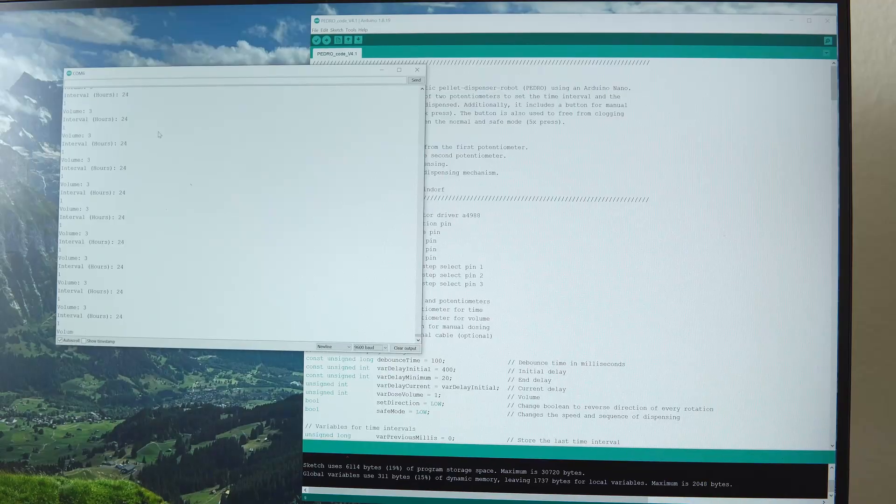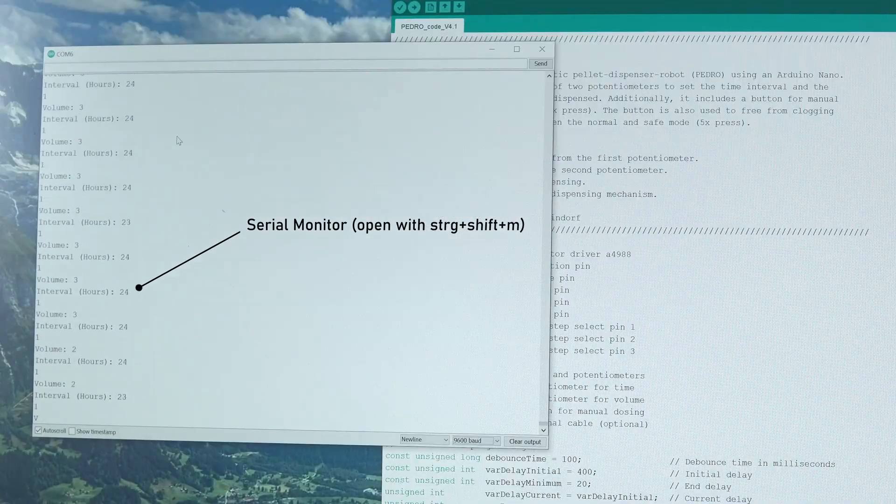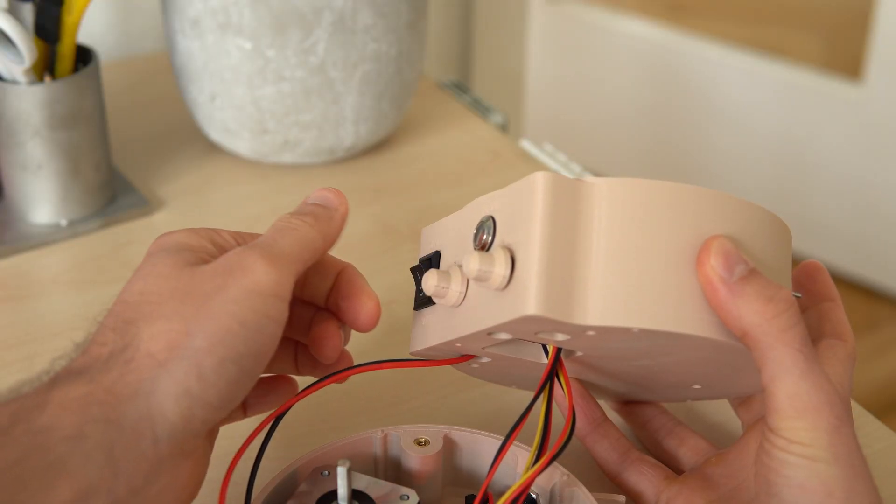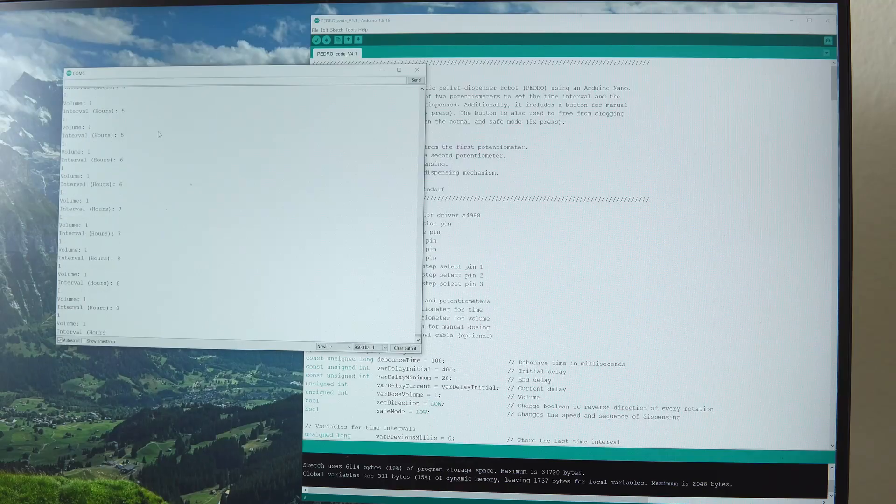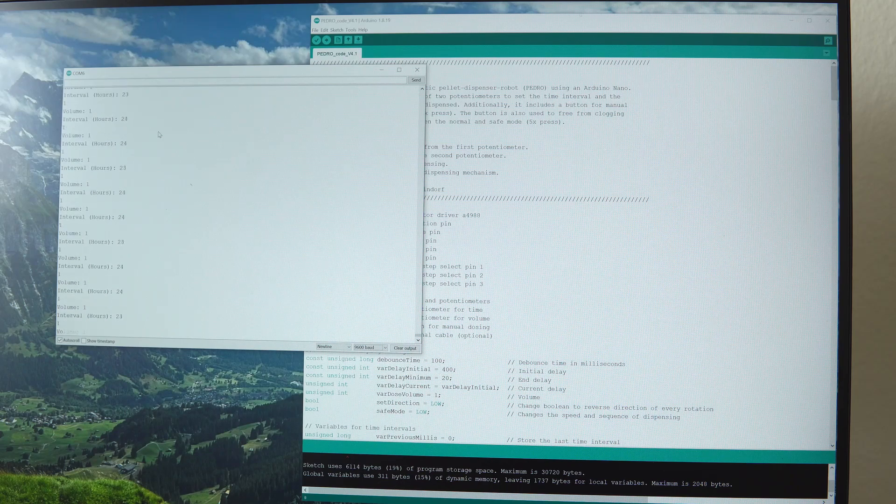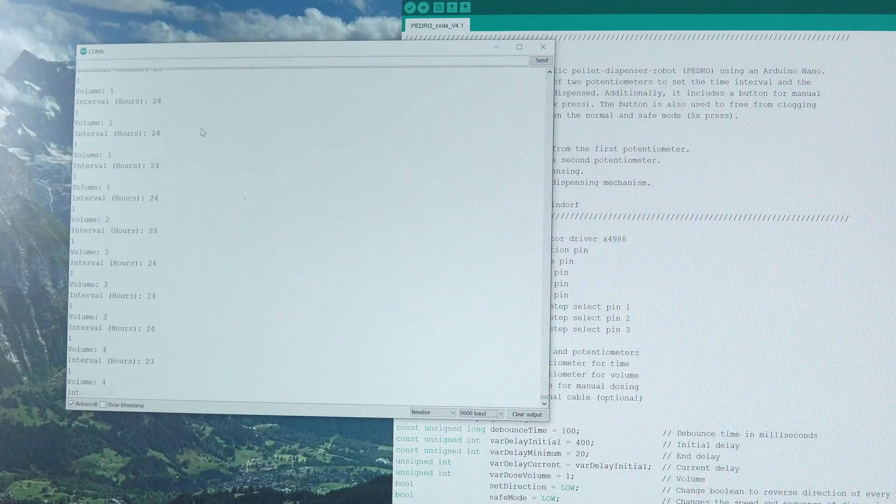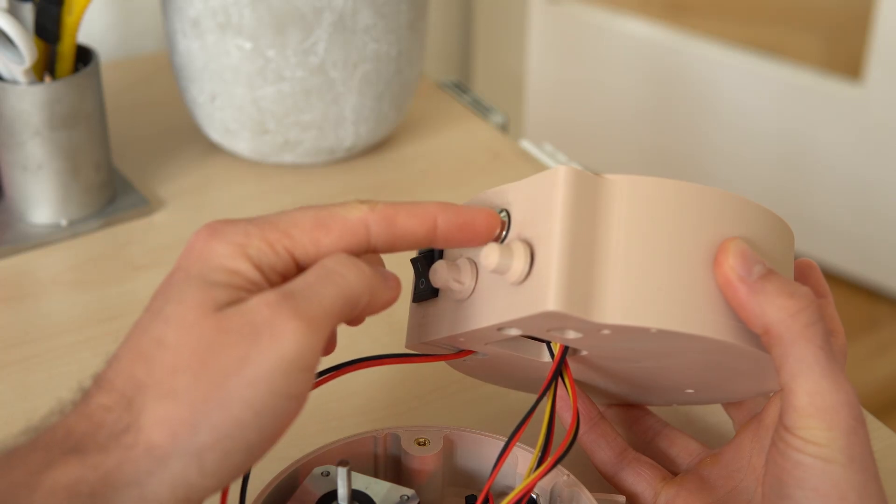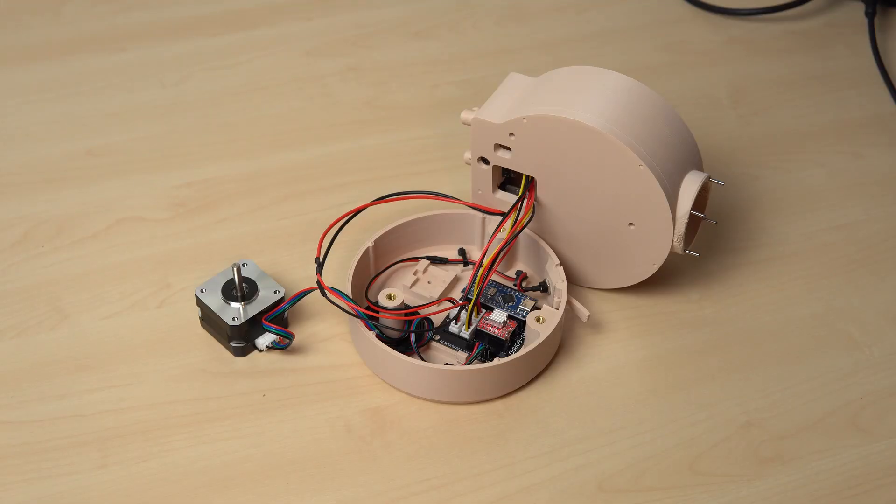For checking if everything works well, I added some serial prints that you can display on the serial monitor. This way you can check the values of the potentiometers for time that should be between 1 and 24 hours, and for volume that should be between 1 and 10 rotations of the screw. Also you can control if all the functions are executed when pushing the button.